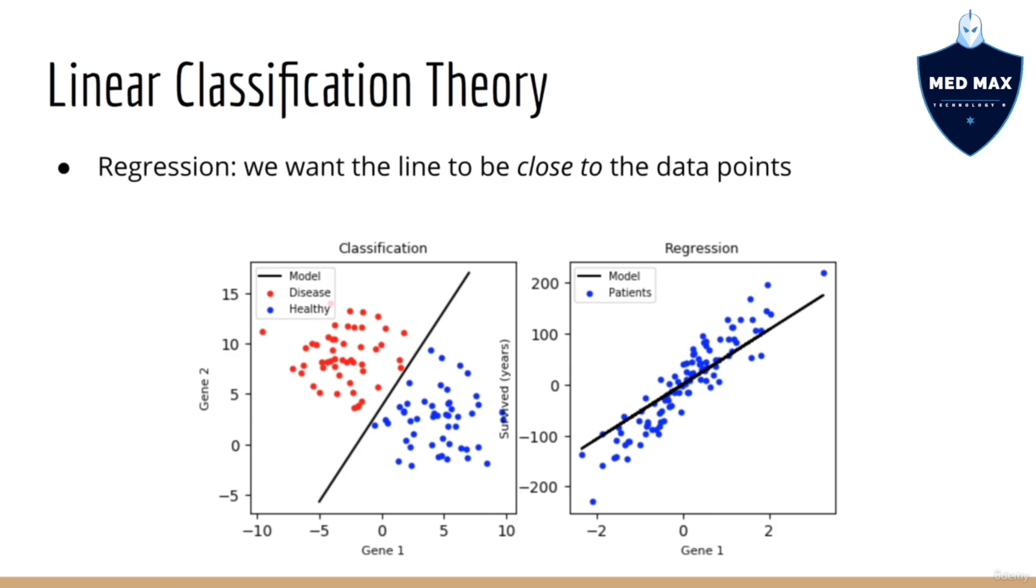In classification, this is not our task. In classification, we do not want the line to be close to the data points. Rather, in classification, our goal is to separate data points into distinct classes. Although we can consider the case where we have more than two classes, we'll start with two since that is the most intuitive.